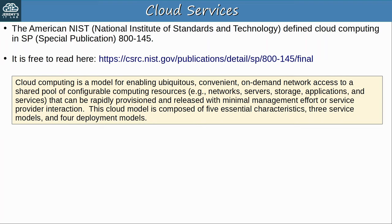Finally there is Infrastructure as a Service, IaaS. The capability provided to the consumer is to provision processing, storage, networks, and other fundamental computing resources where the consumer is able to deploy and run arbitrary software, which can include operating systems and applications. The consumer does not manage or control the underlying cloud infrastructure, but has control over operating systems, storage, and deployed applications, and possibly limited control of select networking components, for example host firewalls. Examples of IaaS services include Amazon EC2 and Google Compute Engine. IaaS offers the most control to the customer — the service provider just offers the underlying infrastructure.